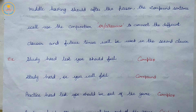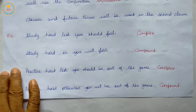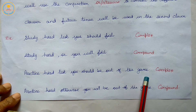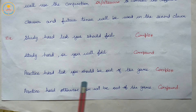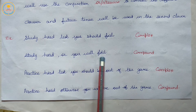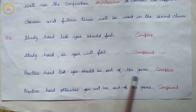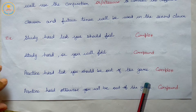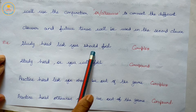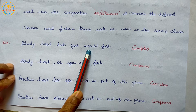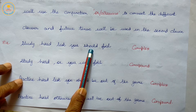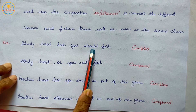Another example for rule two: 'Practice hard lest you should be out of the game' becomes 'Practice hard otherwise you will be out of the game.' So the complex sentence having 'lest' and 'should', when transformed to compound, uses 'or' or 'otherwise' plus future tense in the second clause.